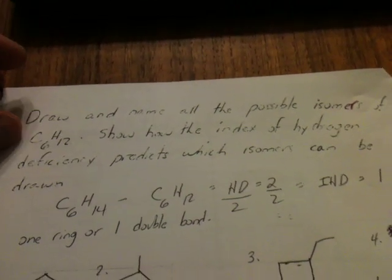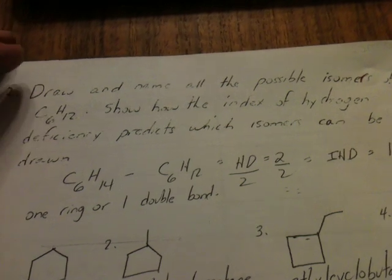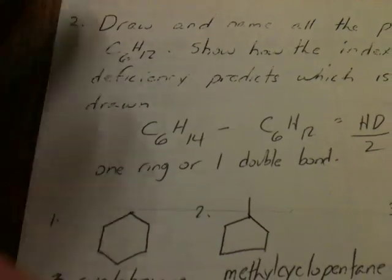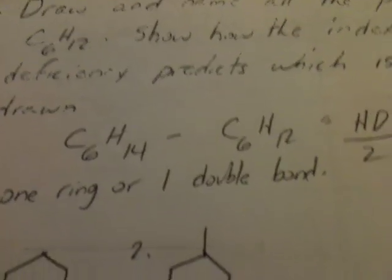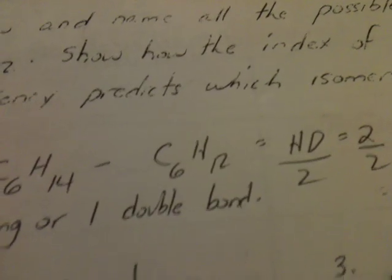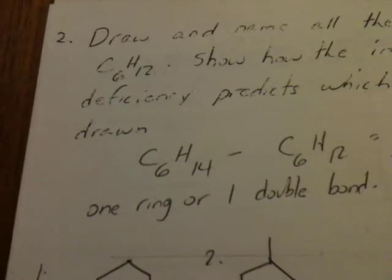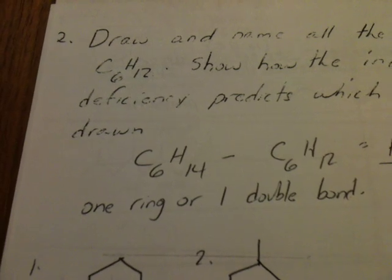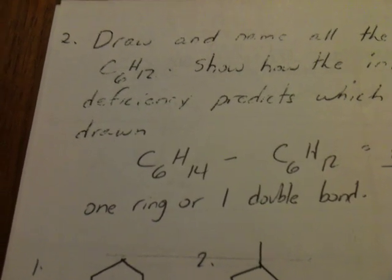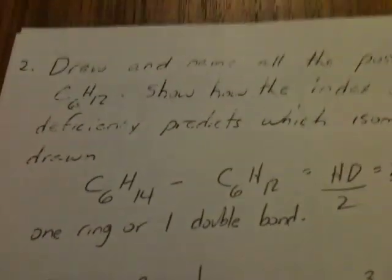Show how the index of hydrogen deficiency predicts which isomers can be drawn. So to calculate the index of hydrogen deficiency, we need to compare the molecule that we're analyzing, which is C6H12, to the parent alkane with the same number of carbon atoms, which in this case is C6H14. So the difference in the number of hydrogen atoms is 2.